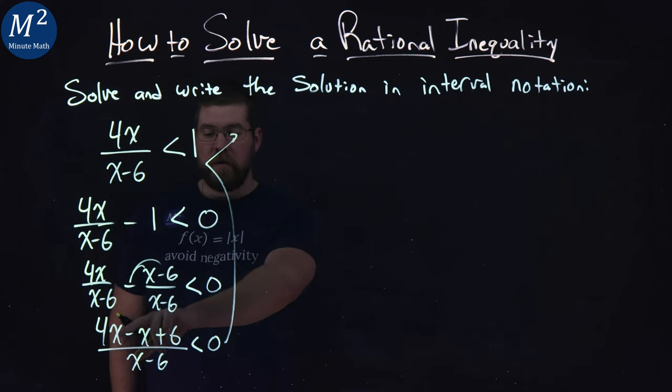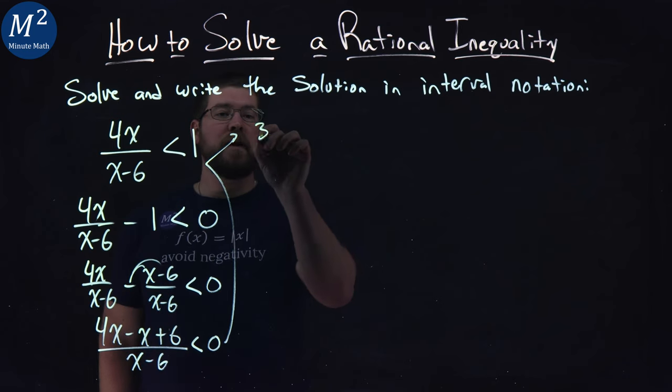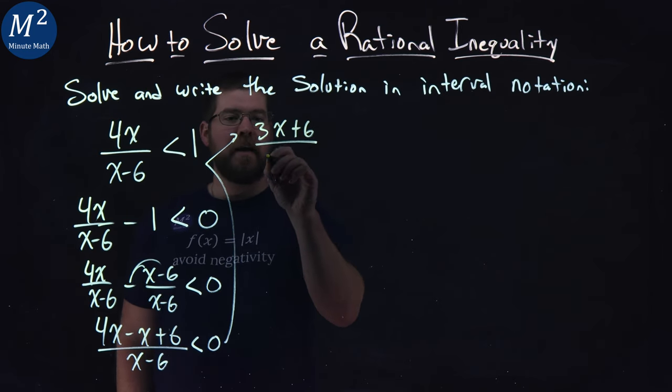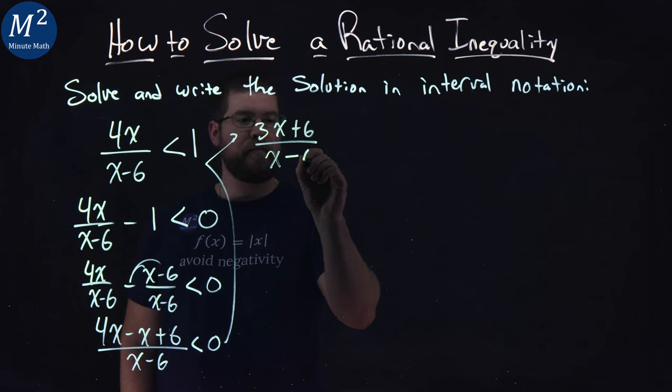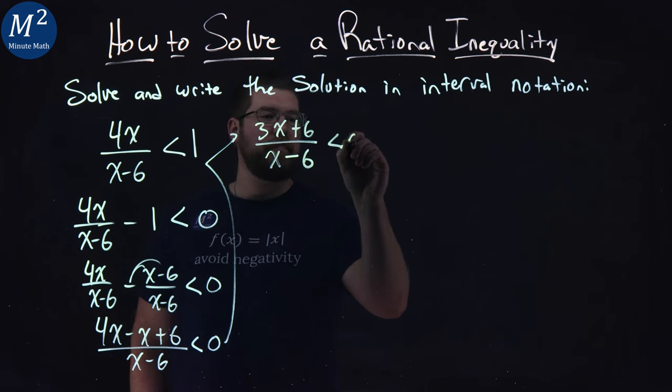Let me rewrite it up here and simplify a little bit. We have 4x minus x is 3x plus 6 over x minus 6, and that's less than 0.